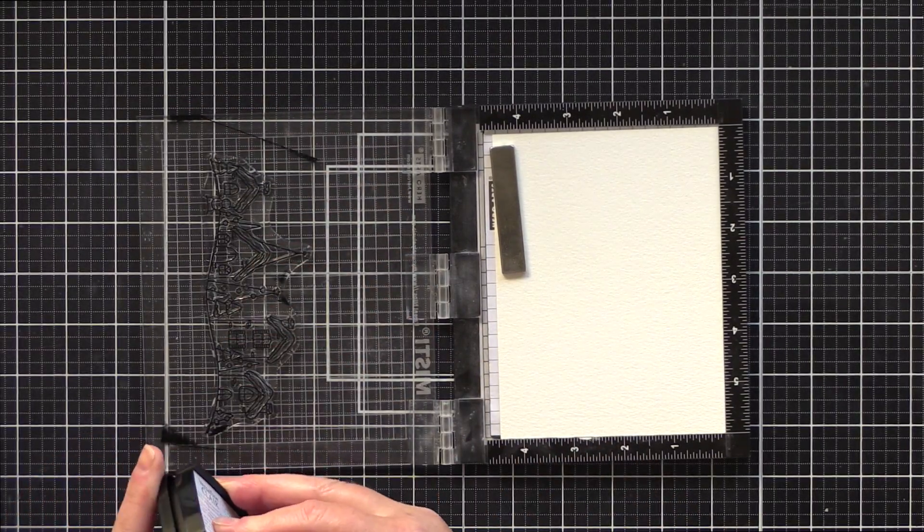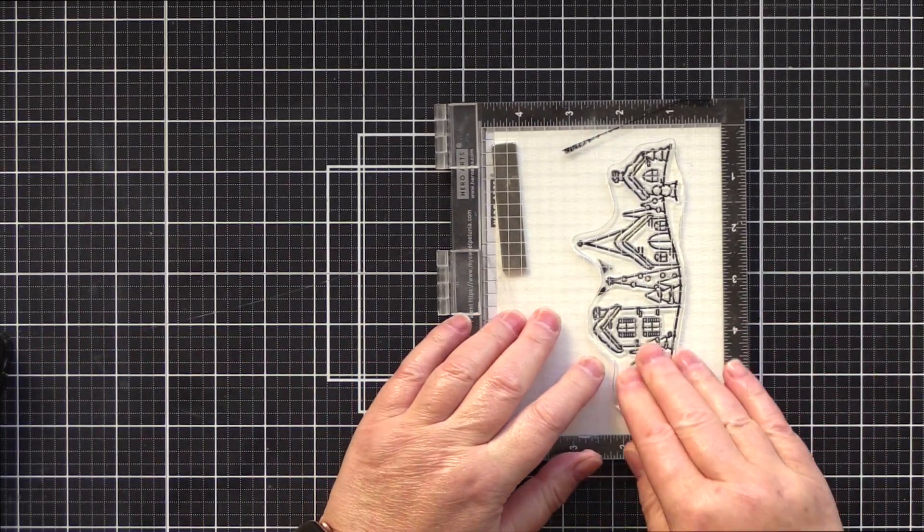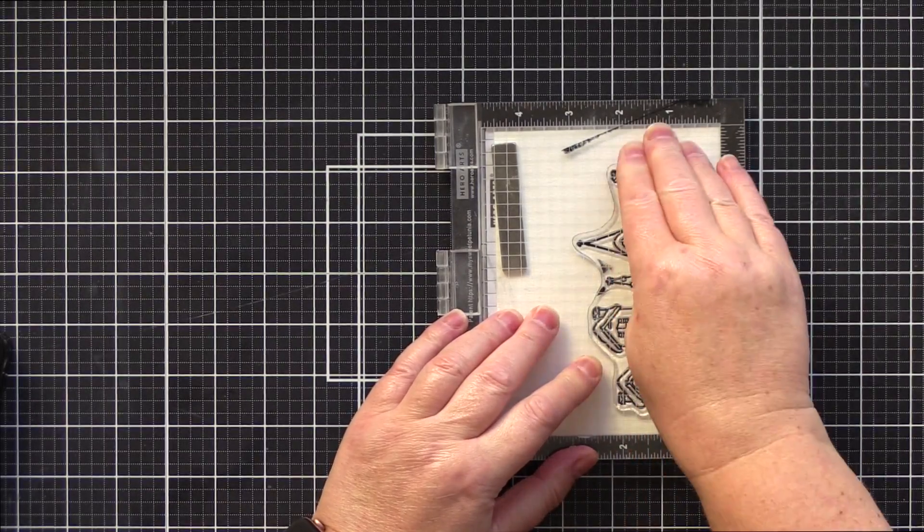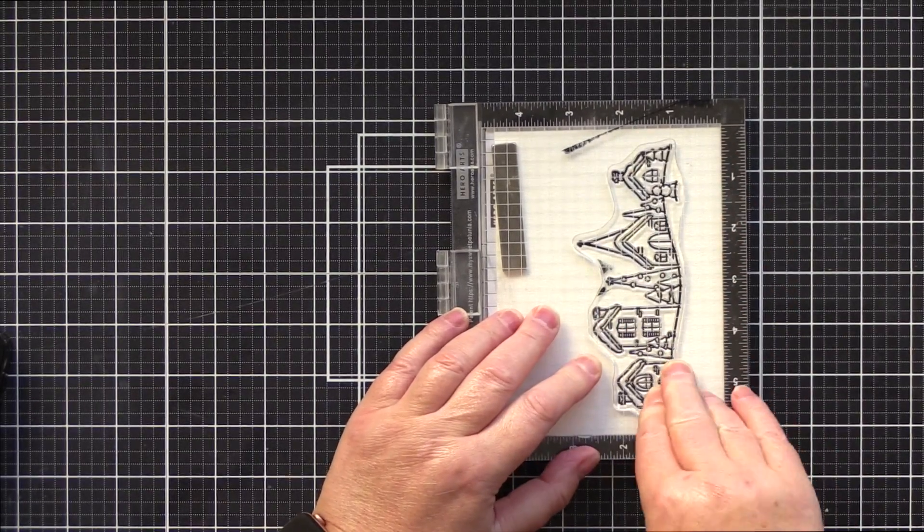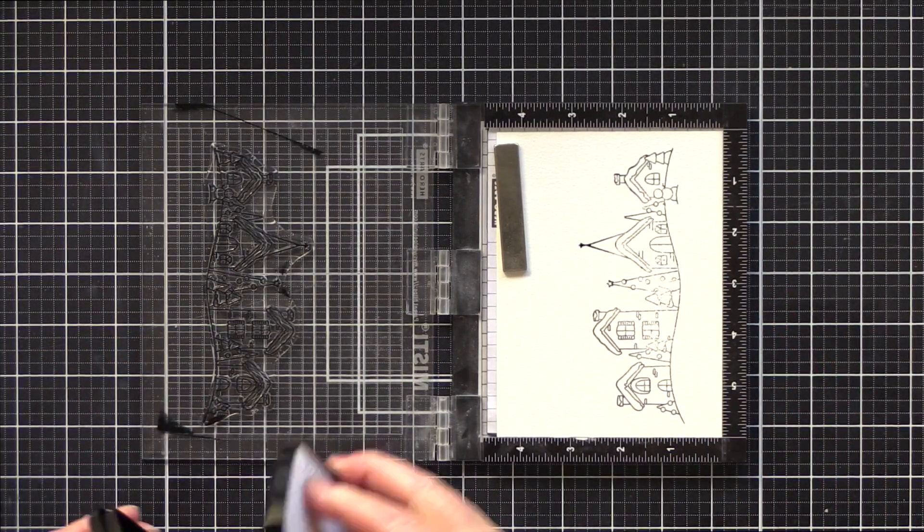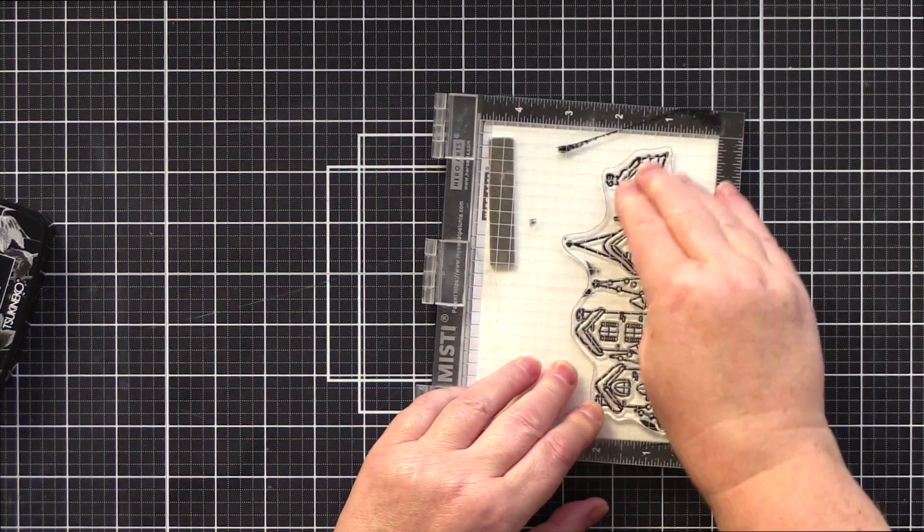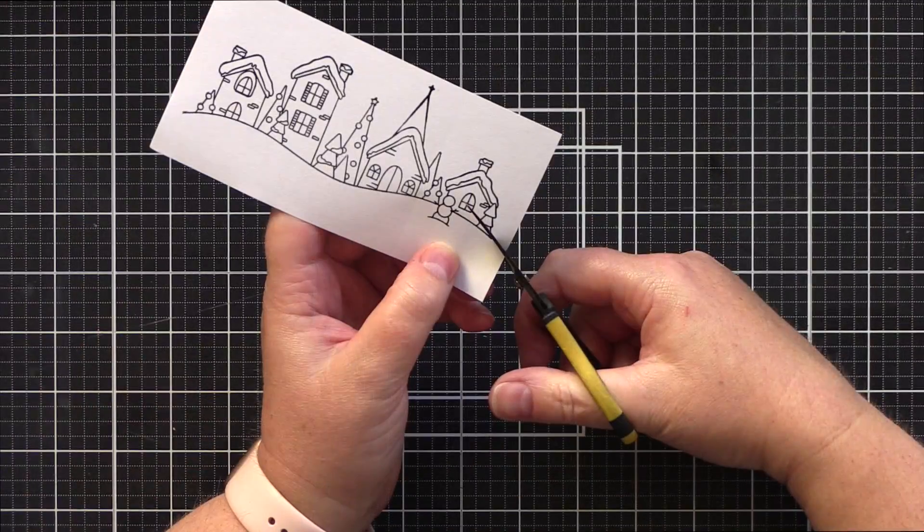To split the card in two, I stamped the houses scene in Nocturne ink on Fabriano Artistico Extra White Cold Press Watercolour card. This took a few times to get a really good impression. And then I stamped it again on Simon Says Stamp masking paper.